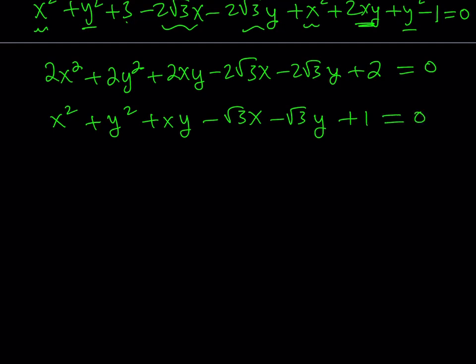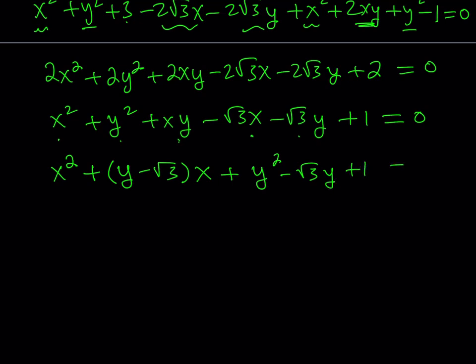Now I'd like to write this as a quadratic equation in x. Isolating the x terms, we get x squared plus (y minus root 3) times x, and then separately y squared minus root 3 y plus 1 equals 0. That's a quadratic equation in x and we can solve it using the quadratic formula. After finding the x values, we should be able to find the other values as well.